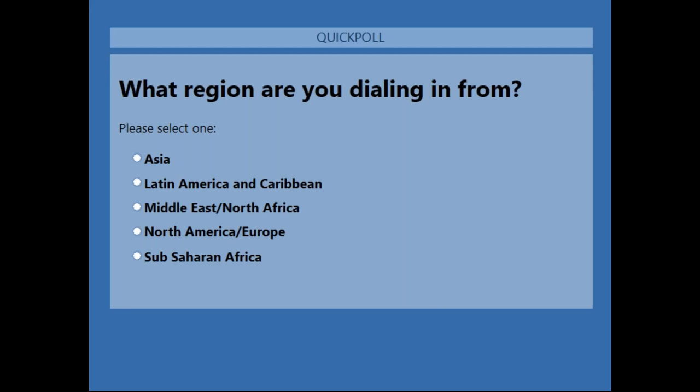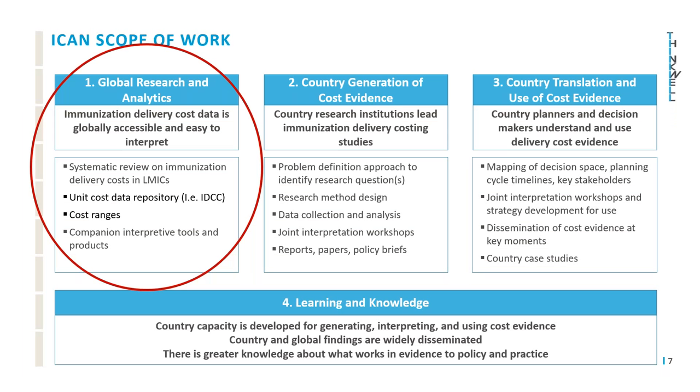The Immunization Costing Action Network, or ICANN's objectives, are twofold: to increase the visibility, availability, understanding, and use of evidence on the cost of delivering immunization services, and to build country capacity around generation and use of cost evidence to work towards sustainable and predictable financing for vaccine delivery. Today, we are discussing the Immunization Delivery Cost Catalog, or IDCC, which was developed under our Global Research and Analytics Program, where we are working to ensure that immunization delivery cost data is globally accessible and easy to interpret. As part of the ICANN, we are also supporting costing immunization studies in four countries: India, Indonesia, Tanzania, and Vietnam. And we are working with policymakers in these four countries on interpretation and use of cost evidence in planning and program decision making.